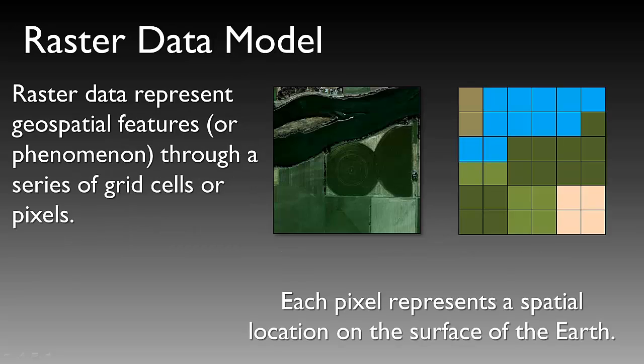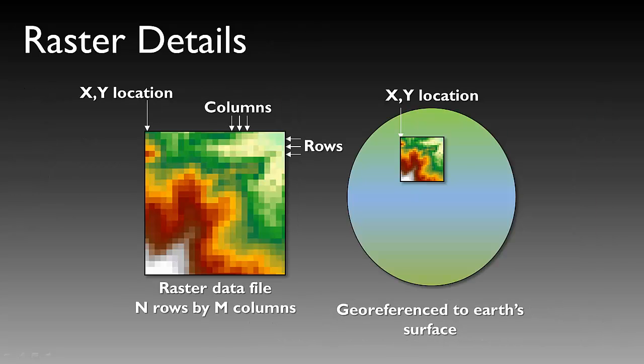Raster data models are very powerful, and you've all seen these if you've looked at Google Earth or maps on your phone. Raster data sets represent geospatial features or phenomena through a series of grid cells or pixels. Each pixel represents a spatial location on the surface of the Earth — an average of a spatial location with some value tied to a single pixel. Each raster has an XY location, is represented by rows and columns, and is generally georeferenced to the surface of the Earth.